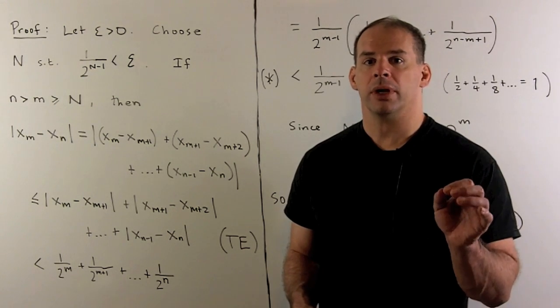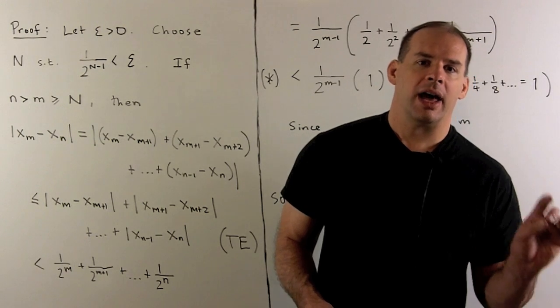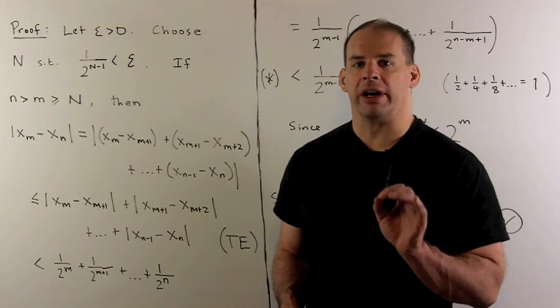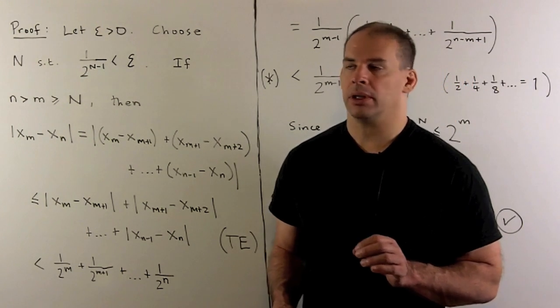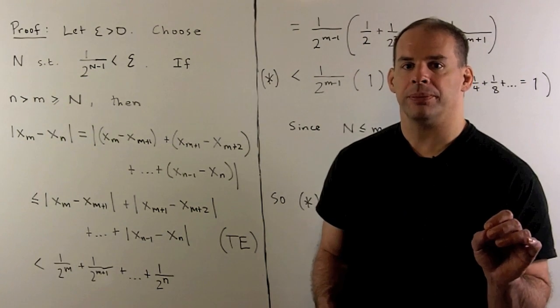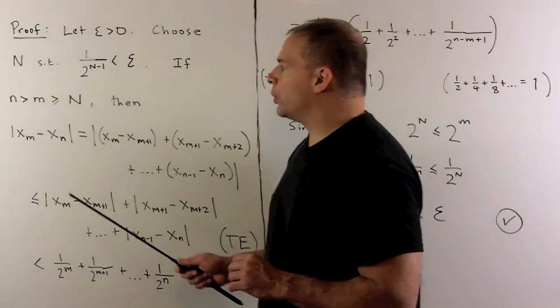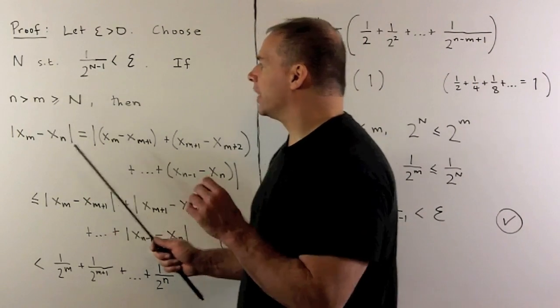For the proof, start by doing our work off to the side. Once we figure out how to do our proof, we come back and write it up nicely. The goal is we take our assumptions and definition, we're going to manipulate the inequalities until we figure out what we should let capital N be for a given epsilon.